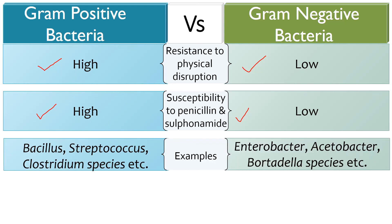Examples of gram-positive bacteria include Bacillus, Streptococcus, and Clostridium species. Examples of gram-negative bacteria include Enterobacter, Acetobacter, and Bordetella species. So friends, this is all for today. I hope you find this lesson very useful. To study this topic in detail, you may visit our official website at biologyreader.com — the links are provided in the description box below. If you find this video useful, do like, comment, share, and subscribe to my channel, and don't forget to hit the bell icon and stay tuned for more videos.